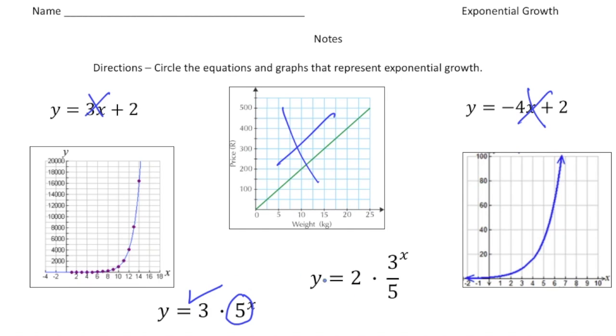And here we have y equals two times three fifths to the x power. And this one is not because the b value is not greater than one. This is going to be something called the decay function, which you're going to learn about soon.